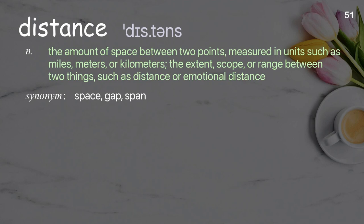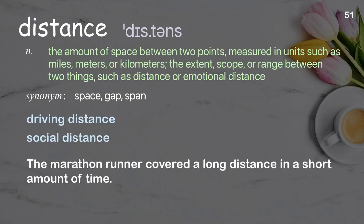Distance: the amount of space between two points measured in units such as miles, meters, or kilometers; the extent, scope, or range between two things, such as physical or emotional distance. The marathon runner covered a long distance in a short amount of time.